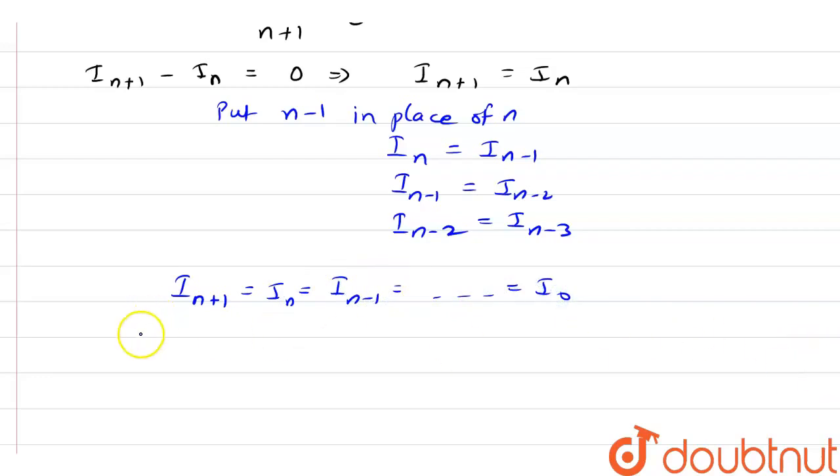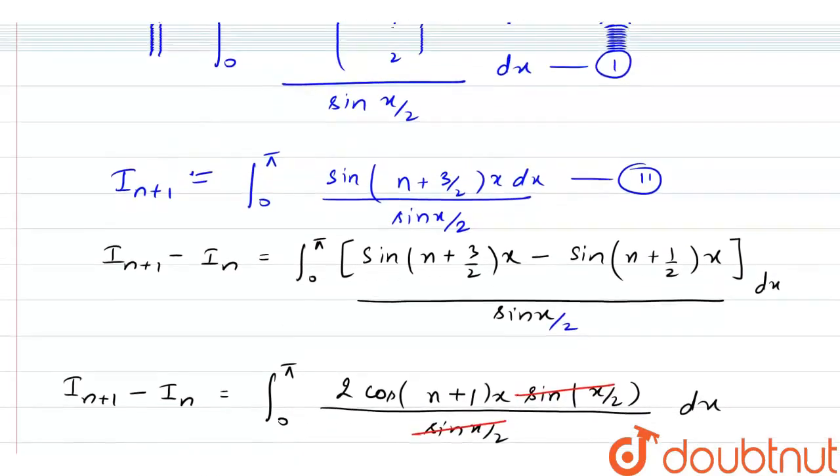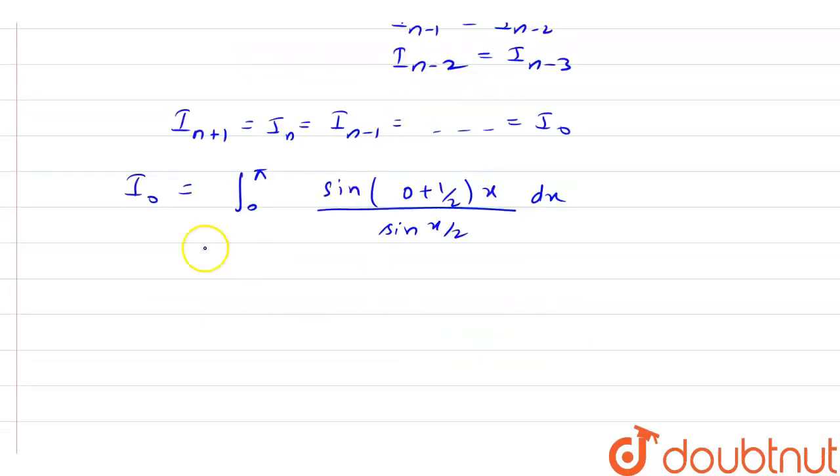If we have to calculate the value of I_0, then what we need to do is put n equals to 0 here. So we have 0 to pi sin 0 plus half x by sin x by 2 dx. This is sin x by 2. So we got I_0 as 0 to pi sin x by 2 divided by sin x by 2 dx. Sin x by 2 will get cancelled out. Integration of dx is x.